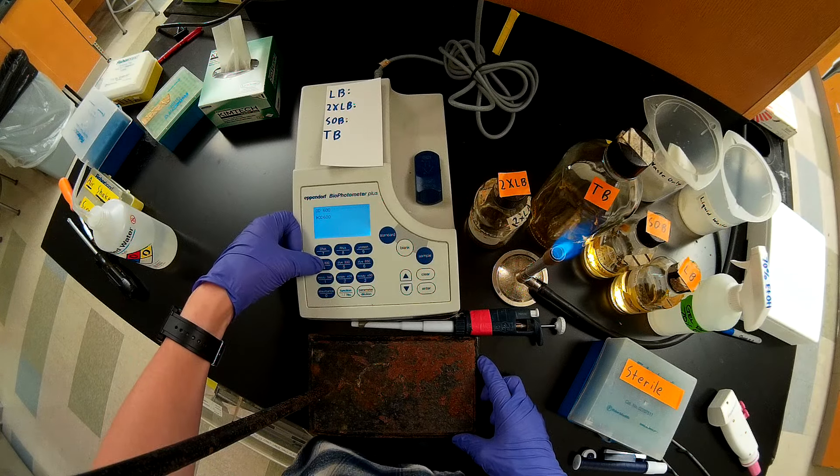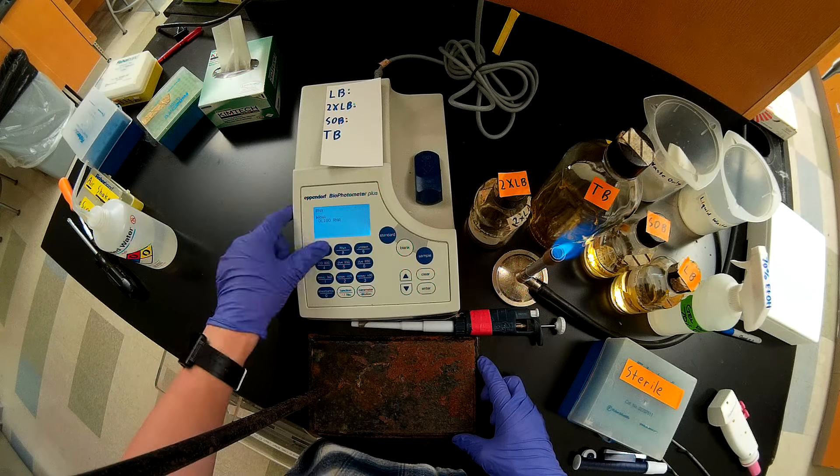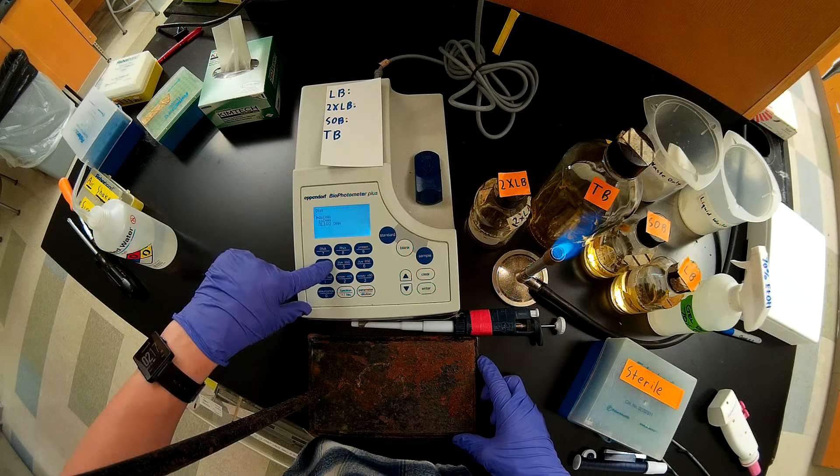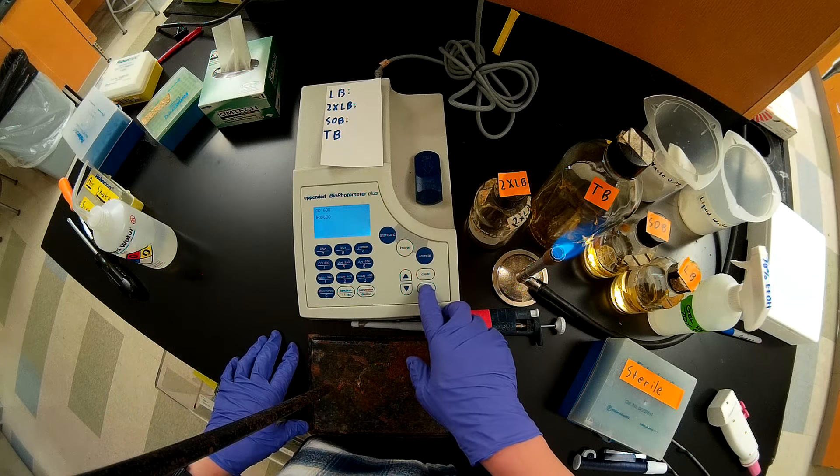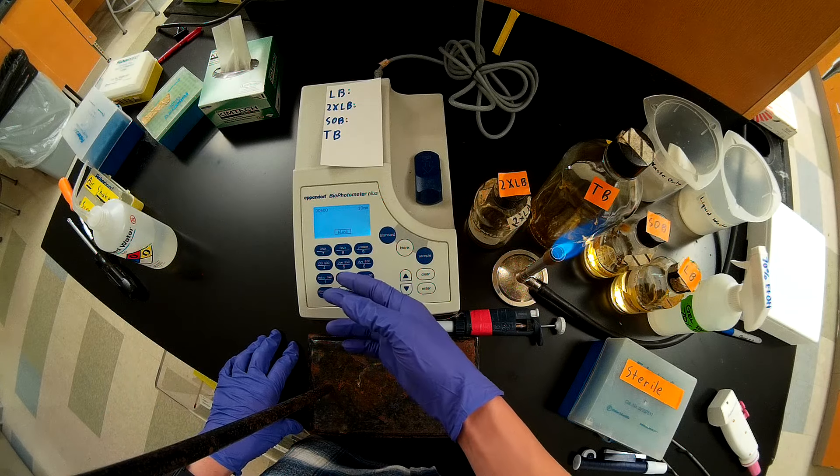It looks like it's already on the OD600 program. If it wasn't, say if it was on the RNA or the DNA program, you would just press the OD600 button. You'd want to press enter. And now it's asking us to blank something.